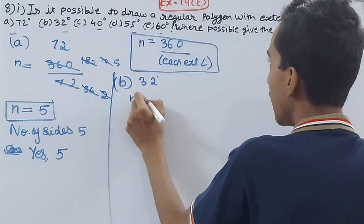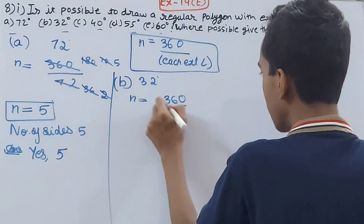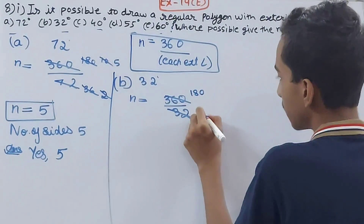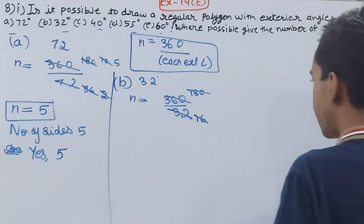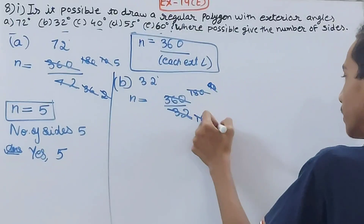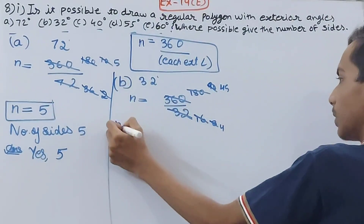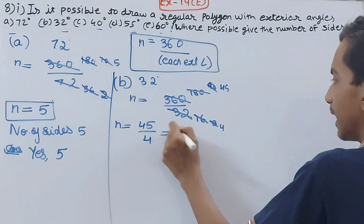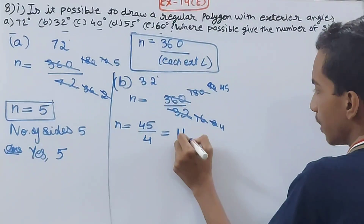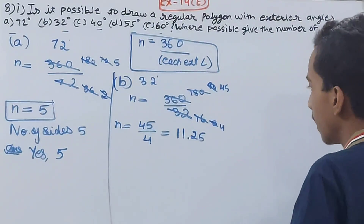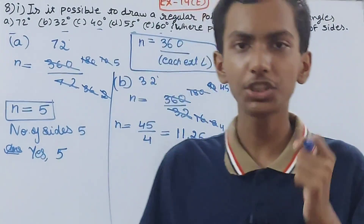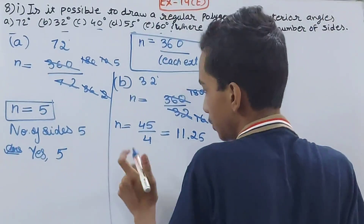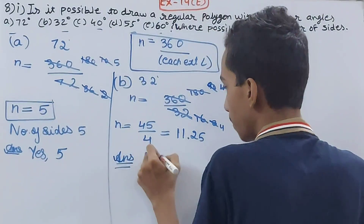For part b, the exterior angle is 32 degrees. So n will be equal to 360 divided by 32. Cancelling step by step: 180 and 16, then 8 and 45, giving n equal to 45 by 4, which is 11 and a quarter, that is 11.25. The number of sides comes out to be 11.25, which is a decimal, so it is not a whole number.